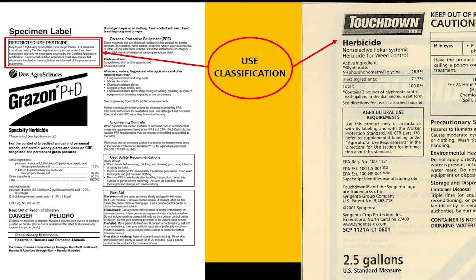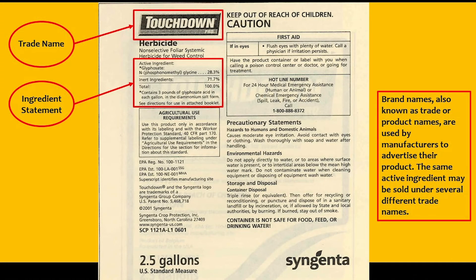Use classification is on the top of a pesticide label. On the label on the left for Grazon P+D, it is listed as a restricted use pesticide. This means you cannot purchase or apply this pesticide without a pesticide applicator's license. The example on the right for Touchdown does not show that restricted use classification at the top of the label, so it can be bought over the counter and does not have those restrictions.